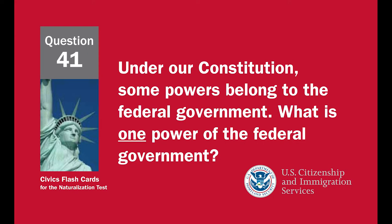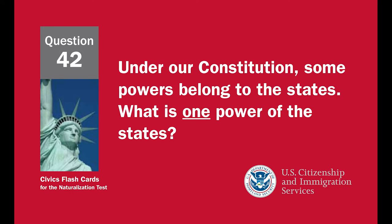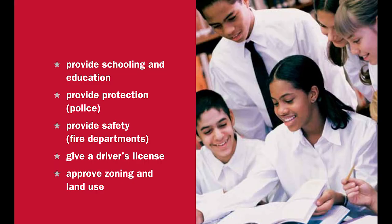Under our Constitution, some powers belong to the federal government. What is one power of the federal government? To print money, to declare war, to create an army, or to make treaties. Under our Constitution, some powers belong to the states. What is one power of the states? Provide schooling and education, provide protection and police, provide safety and fire departments, give a driver's license, or approve zoning and land use.